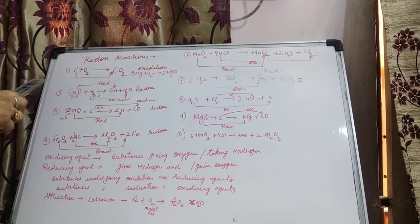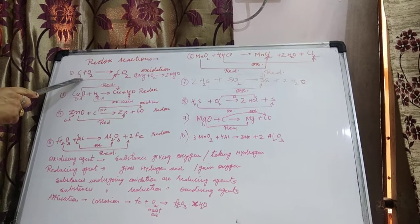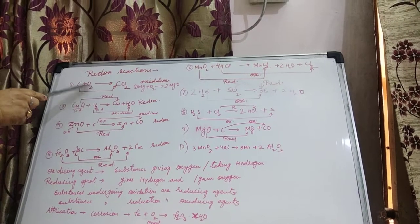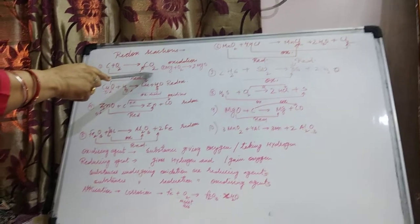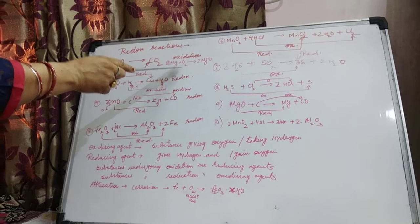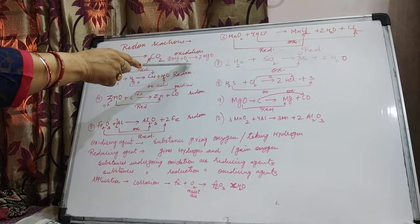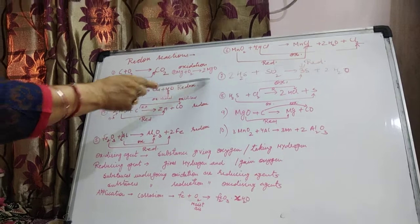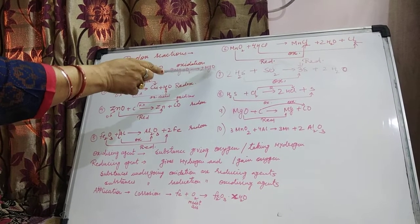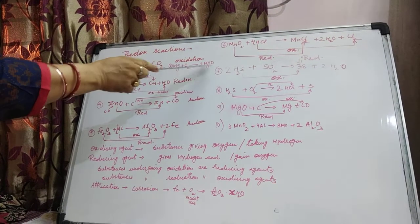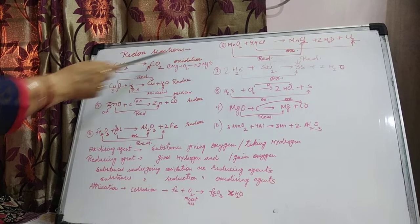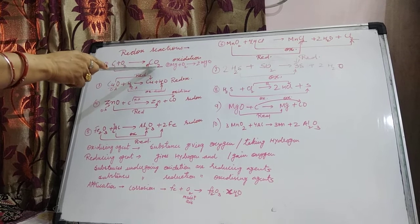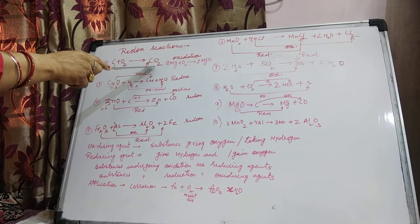Let me start with some very simple reactions. Carbon reacting with Oxygen gives CO₂ — here Oxygen is being added, that is why we call it Oxidation. Similarly, Magnesium reacting with Oxygen gives MgO — addition of Oxygen is taking place, so that is Oxidation as well.